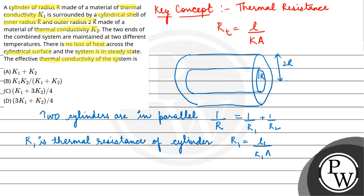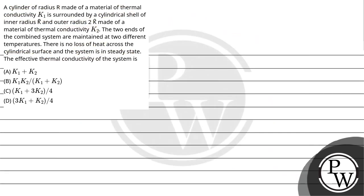R2 is the thermal resistance of the cylindrical shell. R1 is equal to L1 upon K1 A1, and R2 is equal to L2 upon K2 A2. The total resistance of the system R is equal to L upon KA.